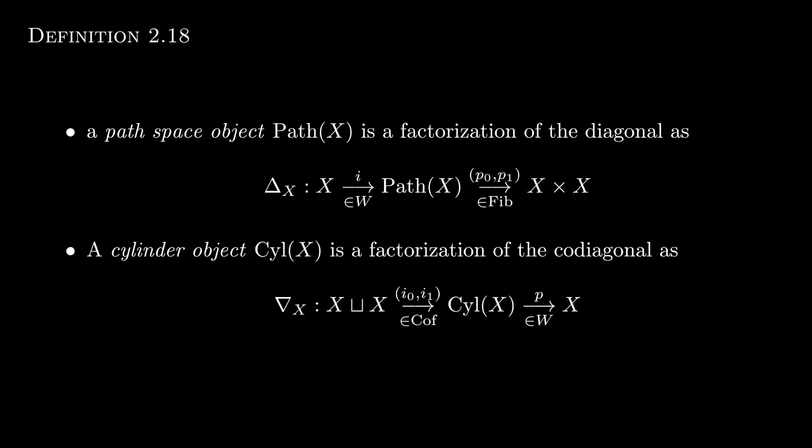Dually, a cylinder object is a factorization of the co-diagonal, i.e. a map from x disjoint union x to x as a co-fibration followed by a weak equivalence.